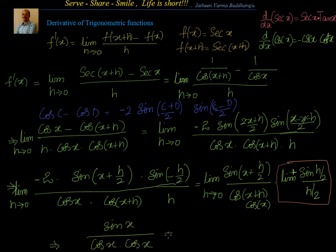Which is equal to sin by cos is tan, and 1 by cos is secant. So the derivative of secant x is secant x into tan x.